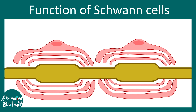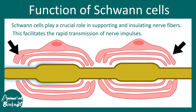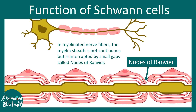The key function of the Schwann cell is to myelinate the axons, thereby creating an insulation for these nerve fibers which helps in nerve conduction. This kind of insulation facilitates the rapid transmission of neuronal impulse. In myelinating nerve fibers the myelin sheath is not continuous but is interrupted in small nodes known as nodes of Ranvier.